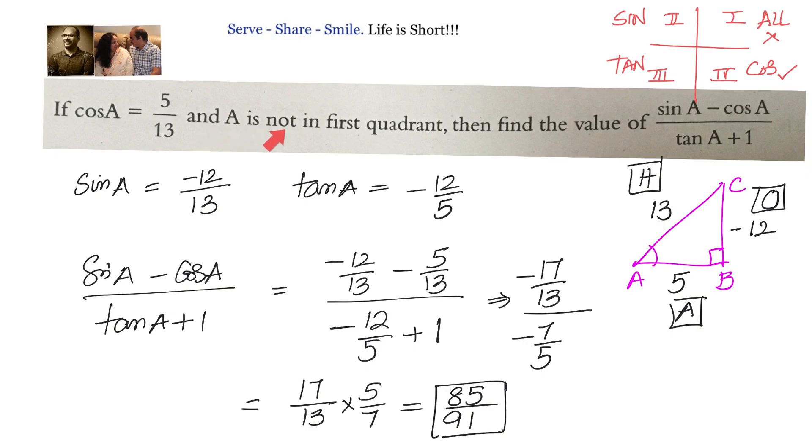The most important thing is this particular point that cos A is positive and A is not in first quadrant. That means A is in fourth quadrant. In fourth quadrant sin and tan both of them are negative.